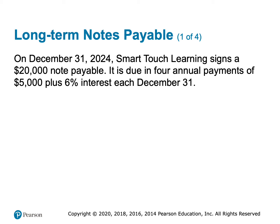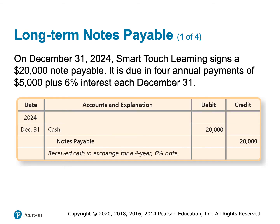Let's look at an example. On December 31st we sign a $20,000 note payable. We're going to pay it back in four annual payments of $5,000 plus 6% interest each December 31st. On December 31st, 2024, the day we borrow the money, we debit cash for $20,000 and credit notes payable for $20,000 — remember, liabilities have a normal credit balance.